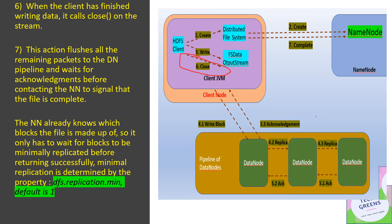Once data writing is finished, the client will call close on the output stream. This action flushes all remaining packets in the data queue to the DataNode pipeline, and then it waits for acknowledgements. Once all acknowledgements are received, the client contacts the NameNode to signal that the write has completed successfully. At this point, the NameNode is already aware of the different blocks for that particular file being written, so it waits for the blocks to be minimally replicated to reduce the overhead of receiving all acknowledgements.